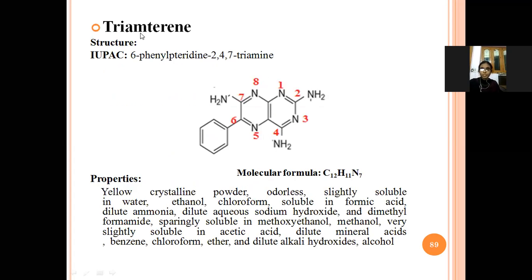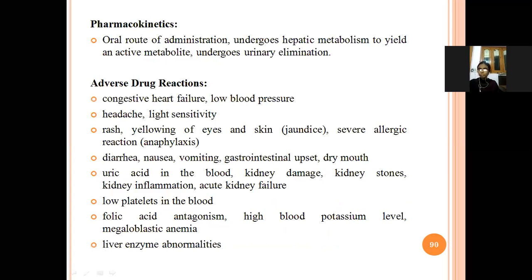Next is triamterene. Its IUPAC name is 6-phenylpyridine-2,4,7-triamine. This is a pyridine structure with a phenyl group in the sixth position and amine groups in the second, fourth, and seventh positions — three amine groups in total, hence named as triamine. Properties: yellow crystalline powder, waterless, slightly soluble in water, ethanol, and chloroform; soluble in formic acid and ammonia; sparingly soluble in methoxyethanol and methanol; very slightly soluble in acetic acid, mineral acid, benzene, chloroform, ether, and alcohol.